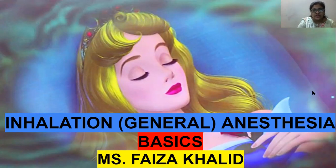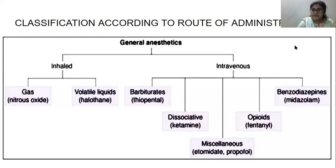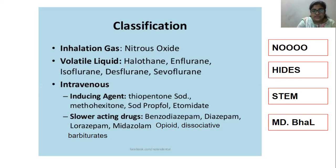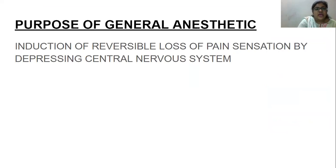We have already seen the general classification: general anesthetics have two major categories — inhaled and IV. In inhalation we have gaseous and volatile anesthetics; in IV we have barbiturates, dissociative agents, opioids, and benzodiazepines. IV drugs are further categorized by duration of action — fast-inducing or slow-acting drugs.